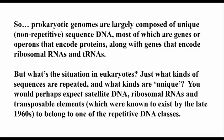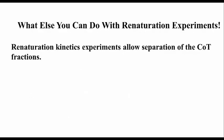But what's the situation in eukaryotes? Just what kinds of DNA are actually repeated and what kinds are unique? You would expect perhaps that satellite DNA and ribosomal RNAs and the transposable elements, which were all known to exist by the late 1960s, you might expect them to belong to one of the repetitive DNA classes. Here's what you can do with renaturation experiments that enables you to ask those questions.